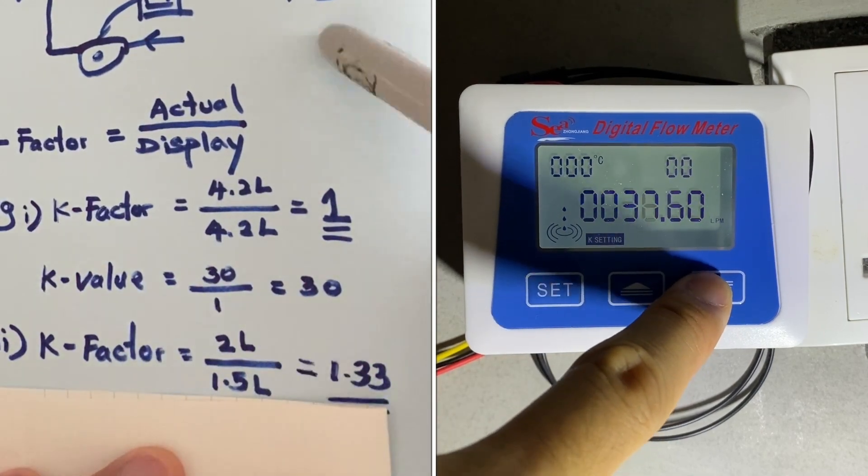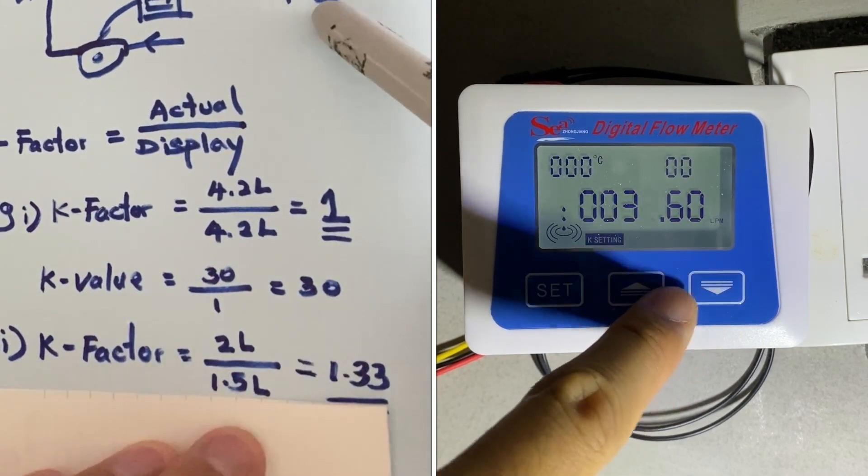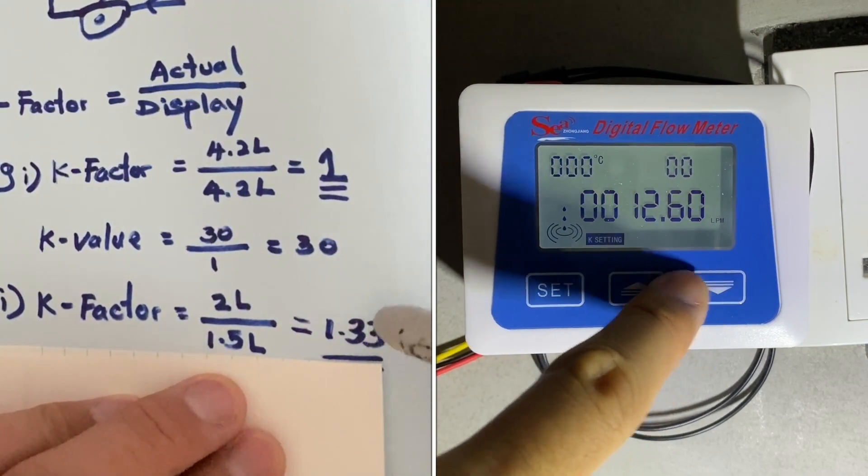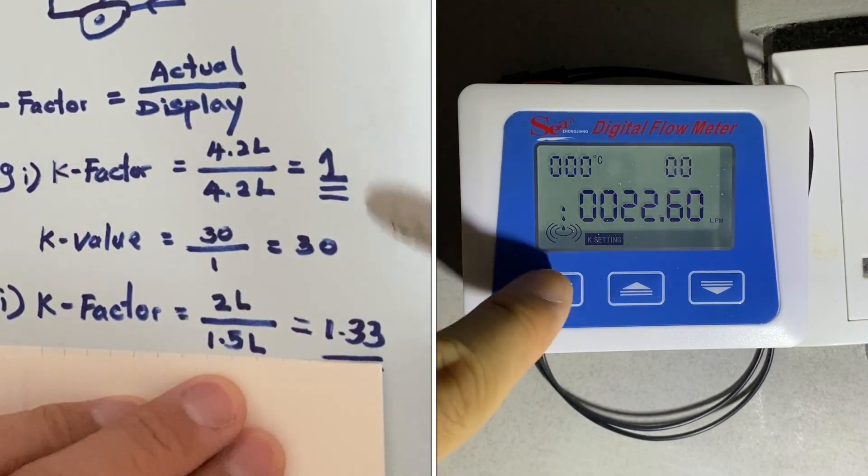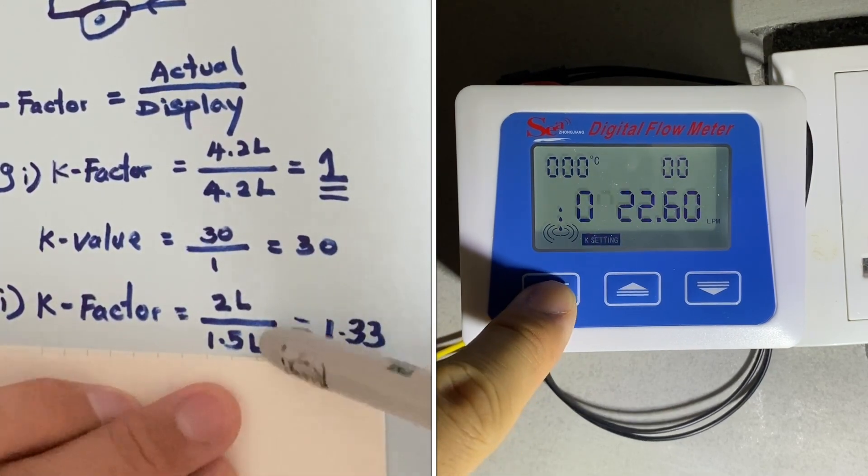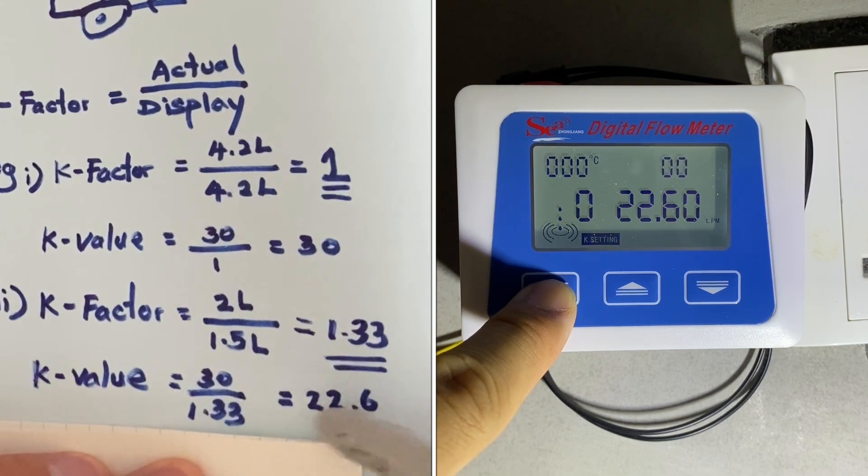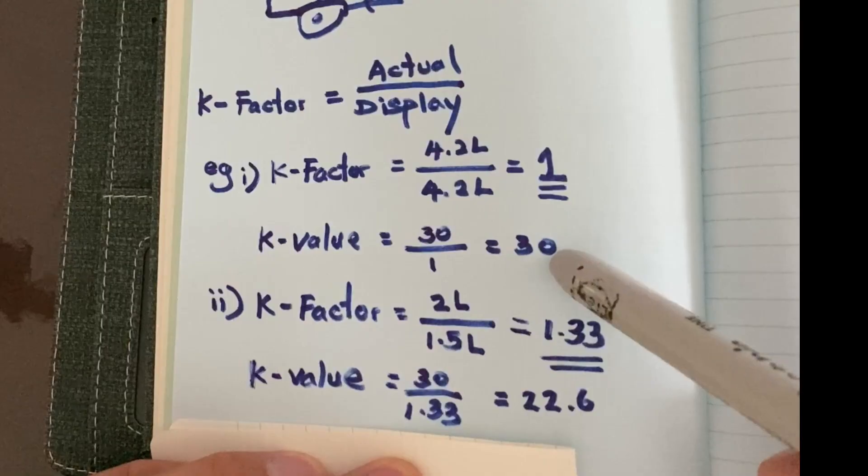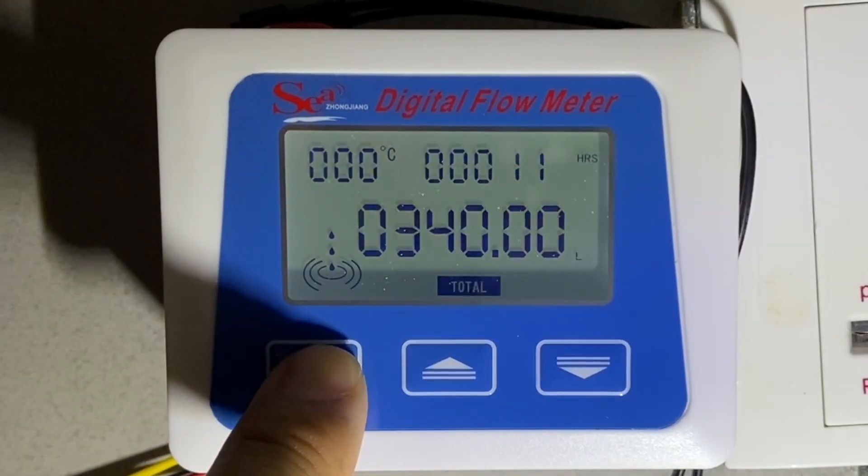Otherwise, if I manage to get 2 liters of water but it records only 1.5 liters, then you divide them, the value is more than 1. So all I need to do is reduce my K value. How to do that? I divide by 1.33, and that's the value that I need to reduce, up to 2.6.